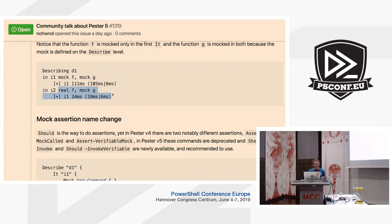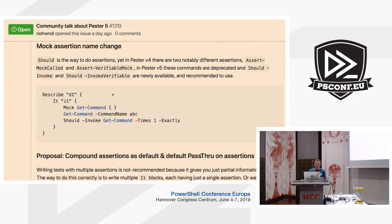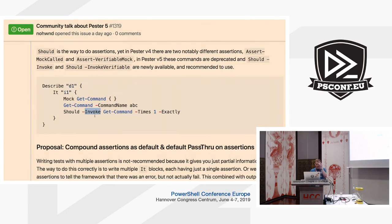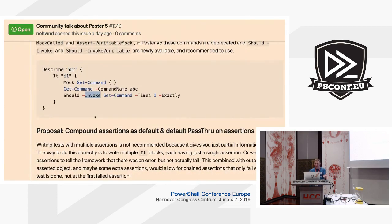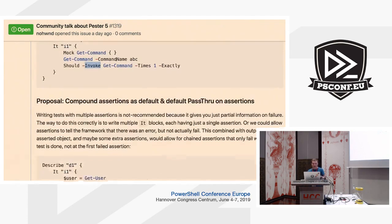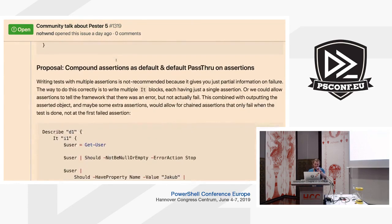It's a small change but very useful. Assertion names are also changed — Assert-MockCalled becomes Should-Invoke. This was agreed on in the issue as the best name, so now everything goes through Should instead of having two separate Assert-Something commands.